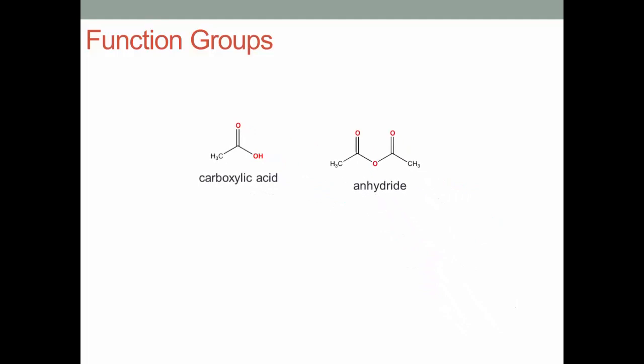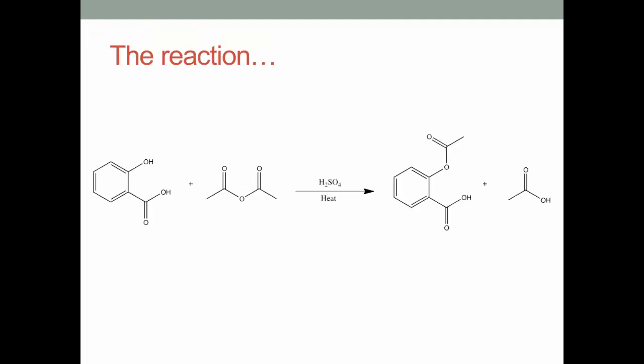This experiment involves the reagent salicylic acid, which contains the functional group carboxylic acid, and acetic anhydride as an anhydride. The reaction is as follows. Salicylic acid and acetic anhydride react in the presence of sulfuric acid and heat to form acetylsalicylic acid and acetic acid.